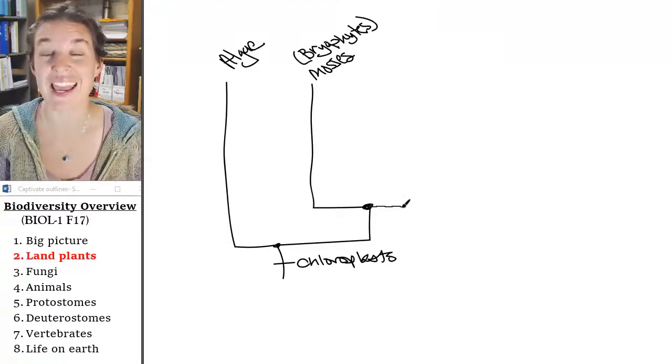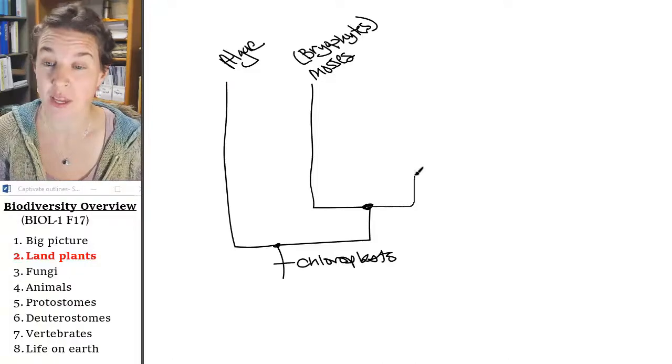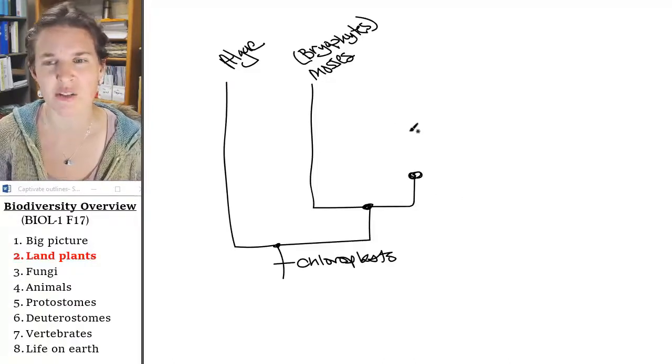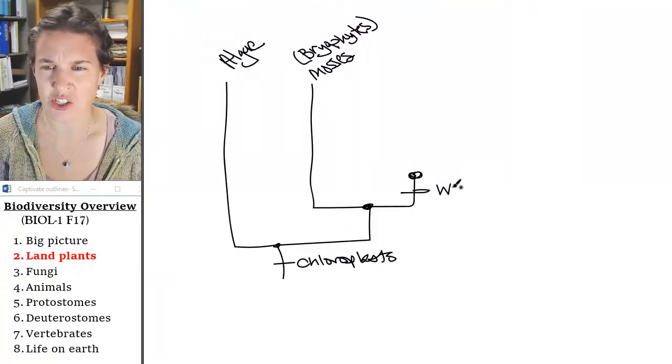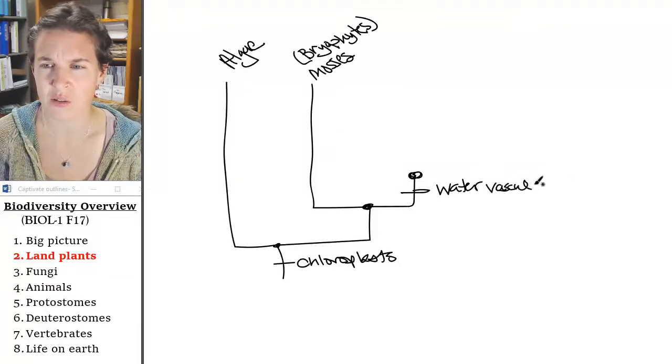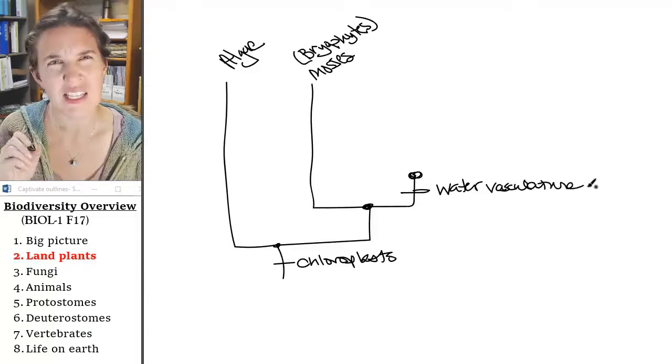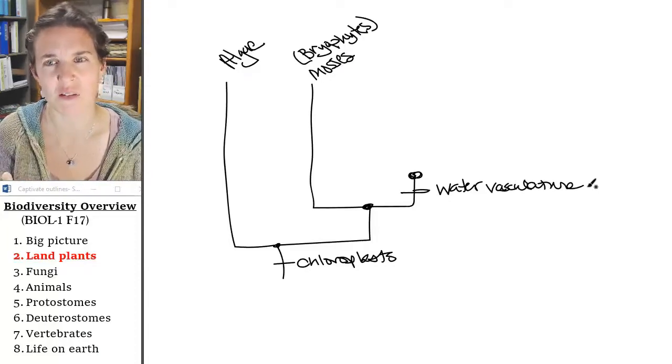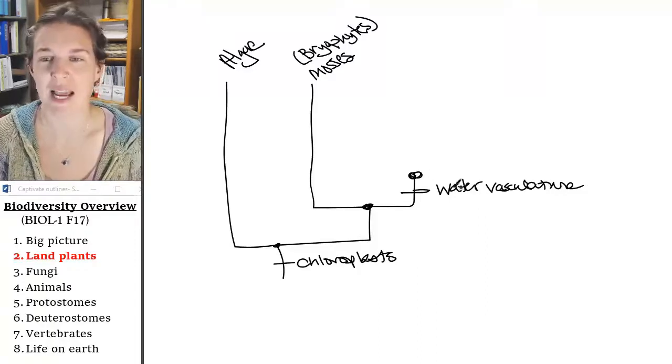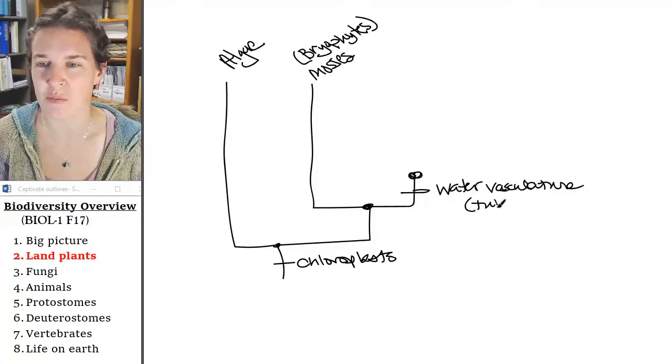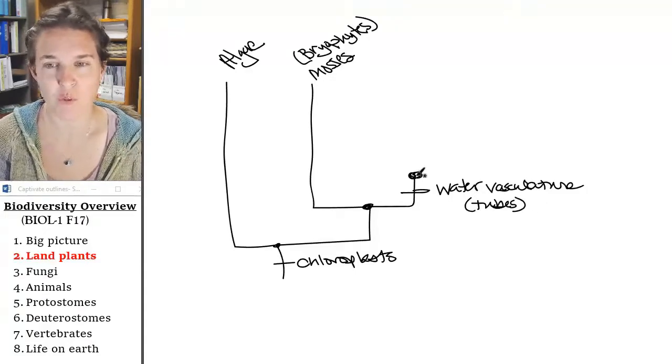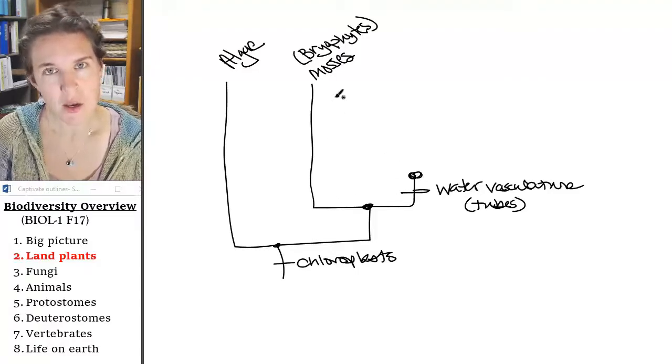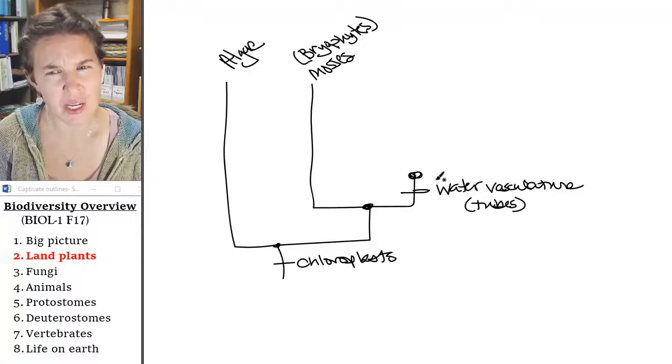Mosses, the ancestor that gave rise to the mosses also gave rise to a group of plants that had a characteristic that mosses don't have, and that's water vasculature. So tell me, what does vasculature make you think of? Blood? Well, it's exactly the same thing. I think of water tubes like blood vessels. Plants got water tubes, and if you think about it, mosses don't have water tubes, but everybody beyond does.